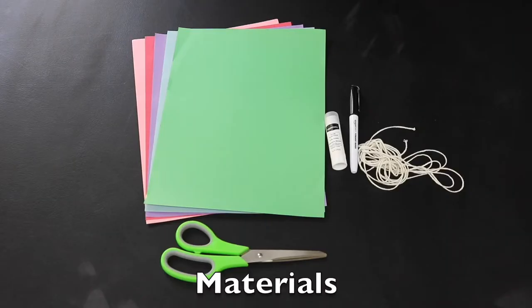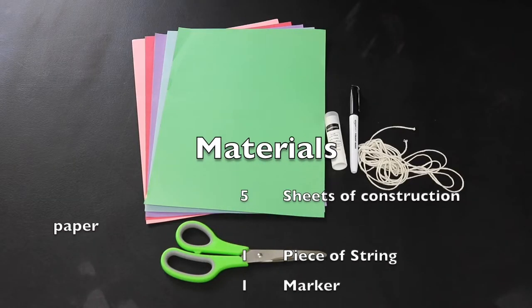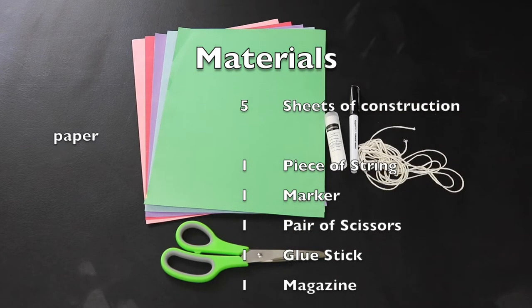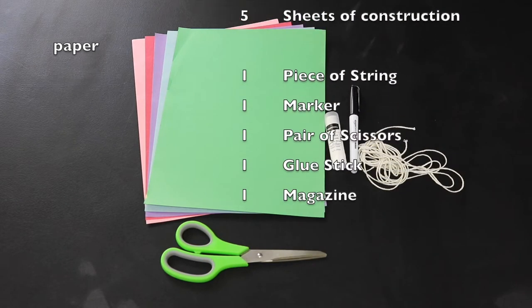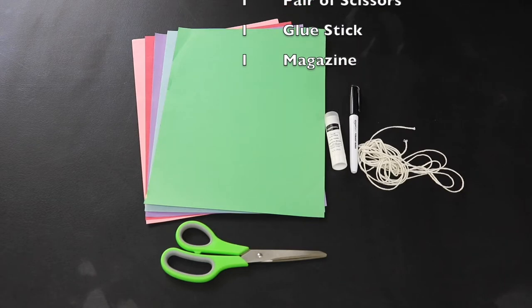For today's activity, you will need five sheets of construction paper, one piece of string, one marker, one pair of scissors, one glue stick, and you can also have a magazine, but this is optional since we did not include it for you.